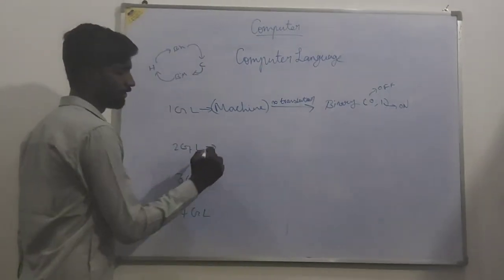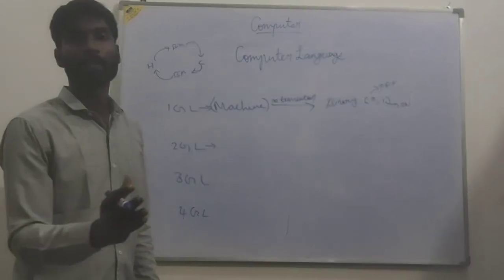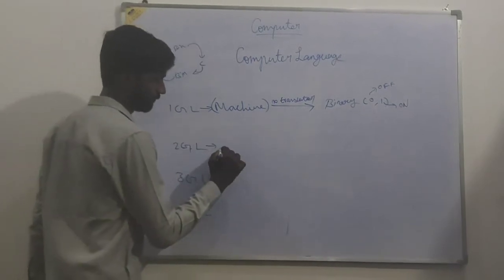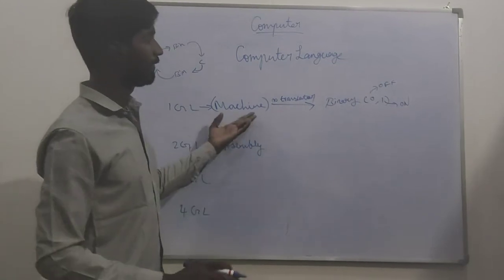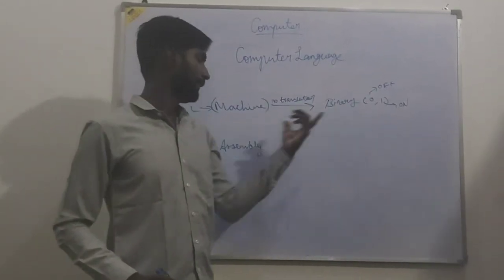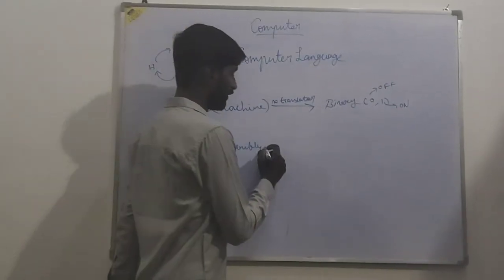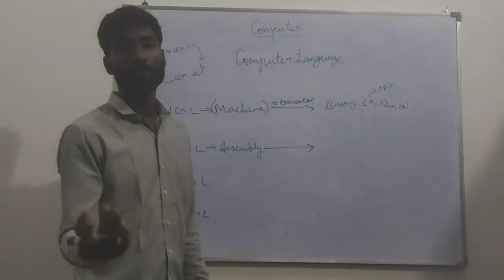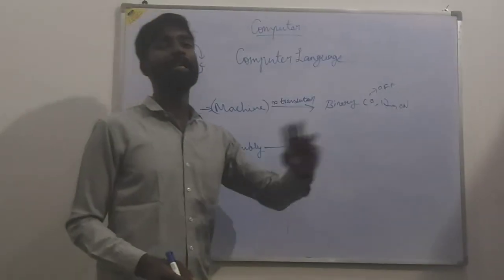Now, second generation language is assembly language. In machine language, everything is binary — only zeros and ones. But when you come to assembly language, there is one difference: we can use mnemonic codes, meaning nicknames. In some places we can use symbols, and in some places we can use names.